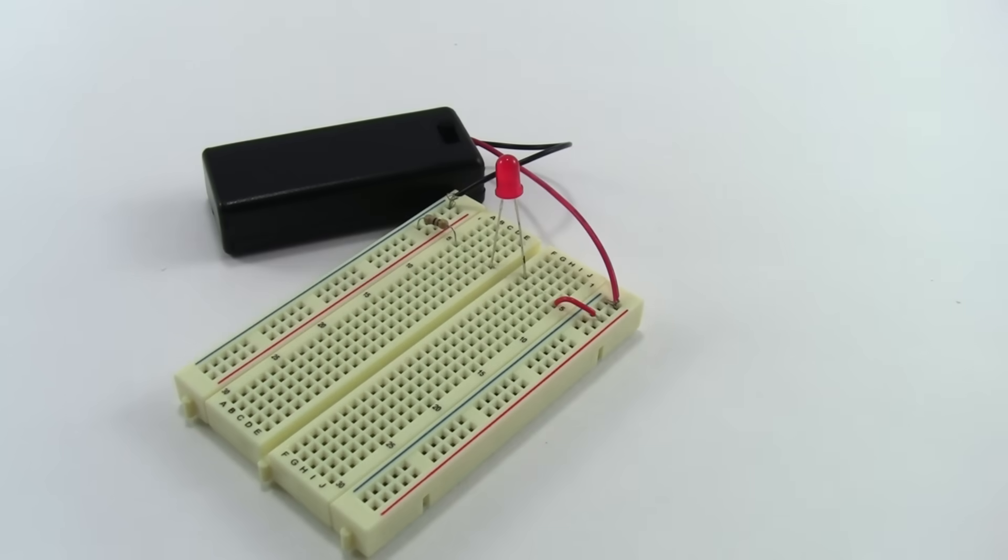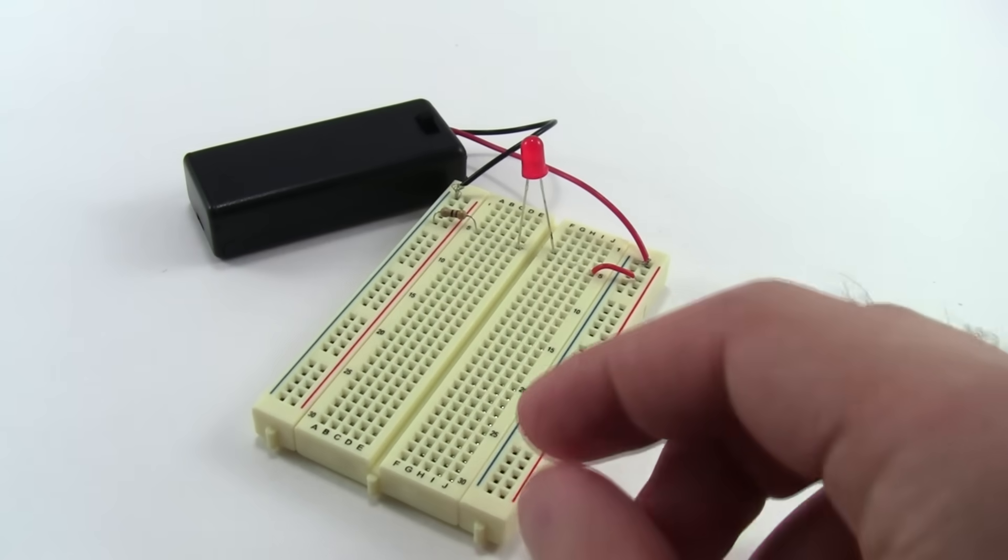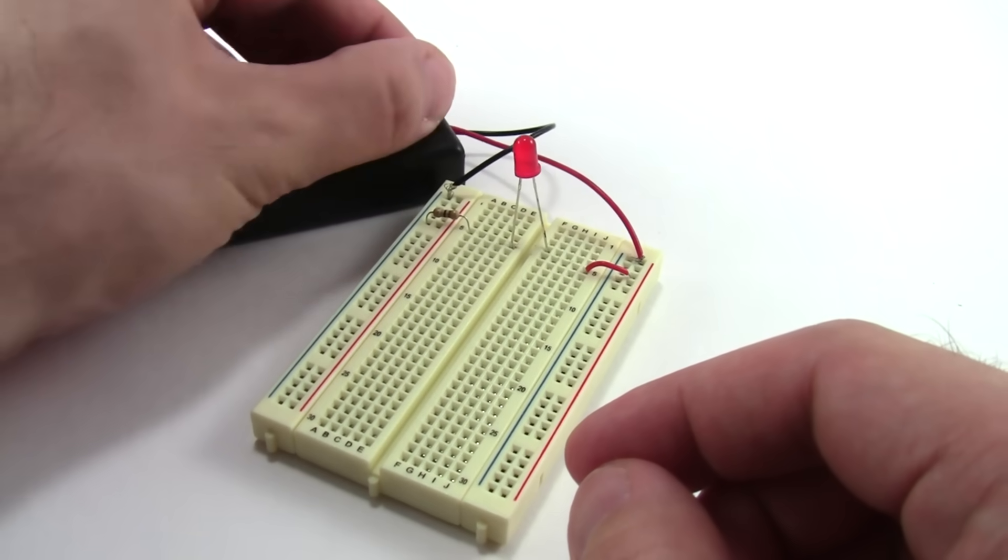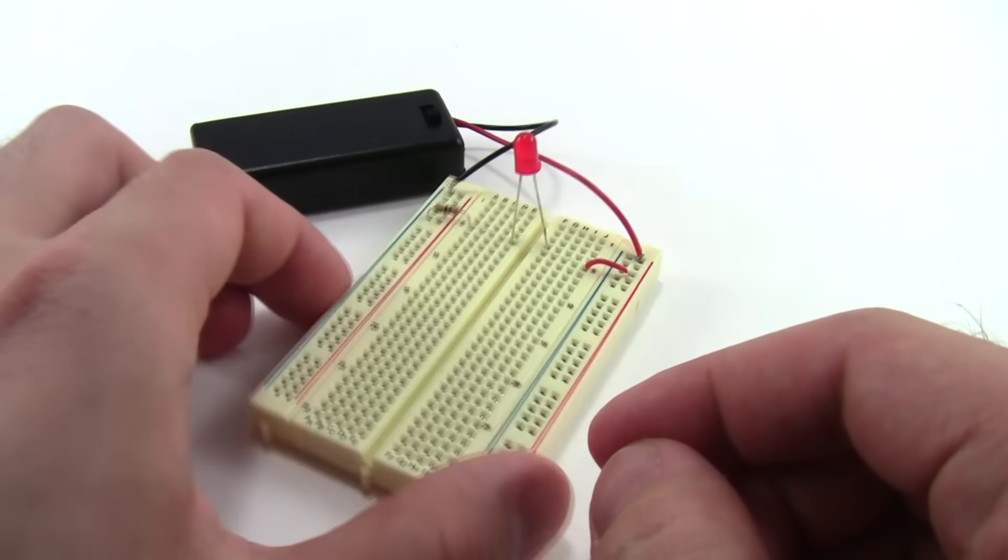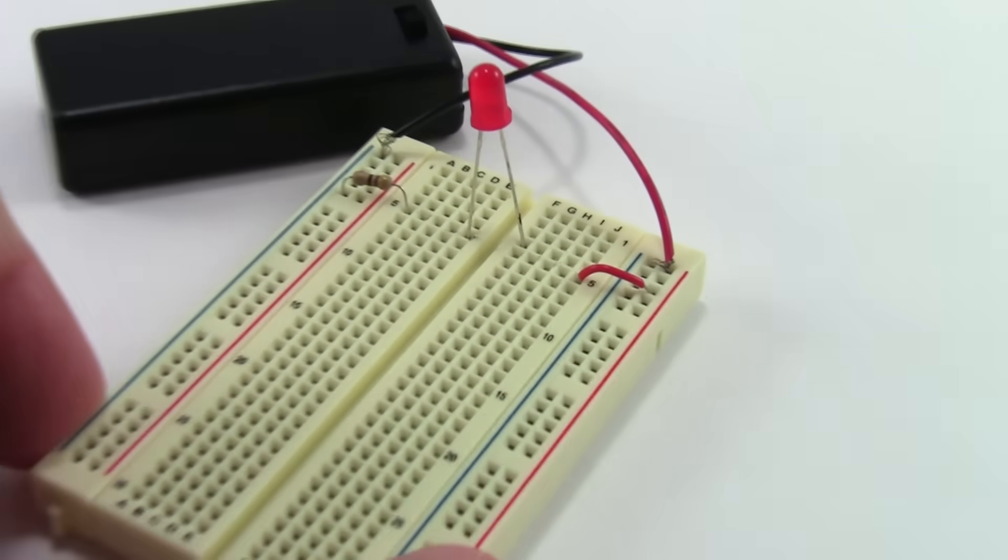Now let's take a look at some of the most common mistakes that students make when learning to use a breadboard. Here we have the demonstration circuit from the previous part of the video with a battery, a resistor, and an LED. At first glance, everything probably looks fine, but when I turn the battery pack on, the LED doesn't light up. You won't know why unless you look closely at the breadboard.